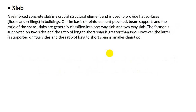First of all, what is a slab? A reinforced concrete slab is a planar structural element used to provide a flat surface, floor, or ceiling in a building. On the basis of reinforcement provided, beam supports, and the ratio of span, slabs are generally classified into one-way slab and two-way slab. The former is supported on two sides and the ratio of long to short span is greater than 2. However, the latter is supported on four sides and the ratio of long to short span is smaller than 2.